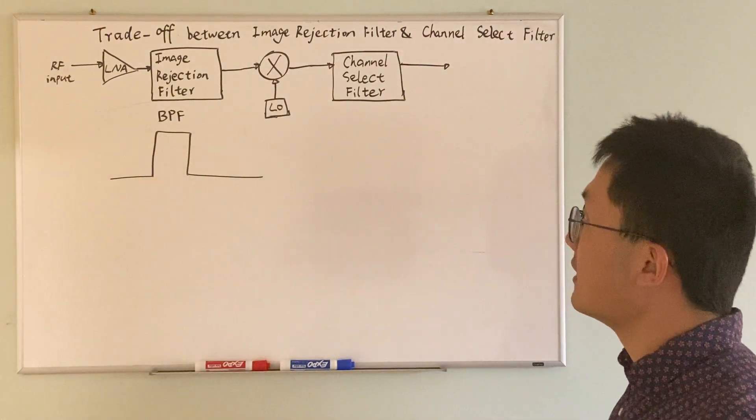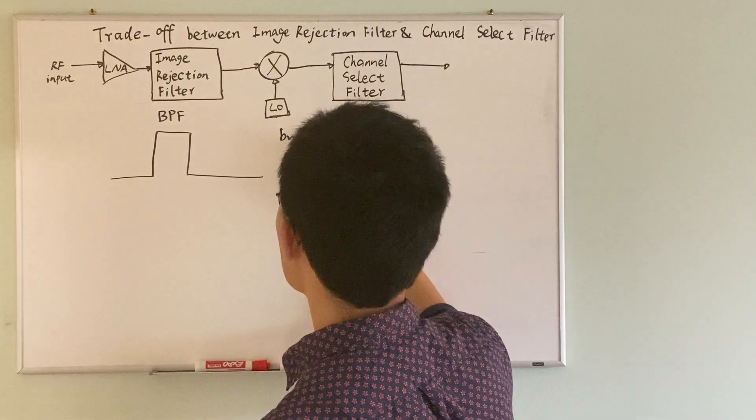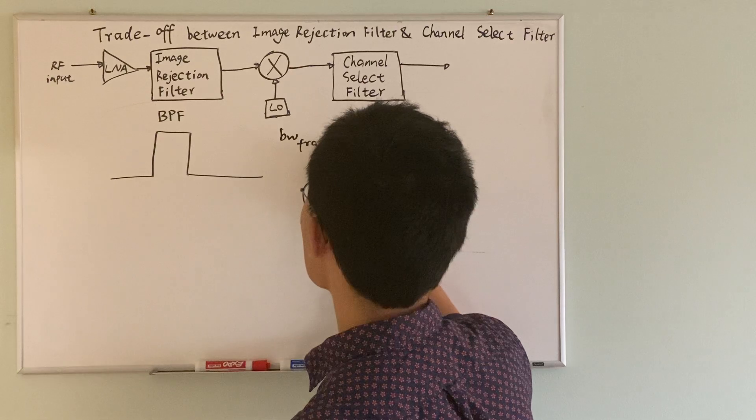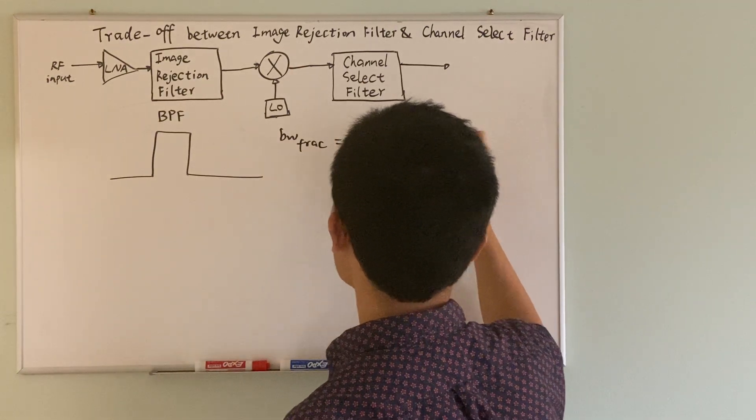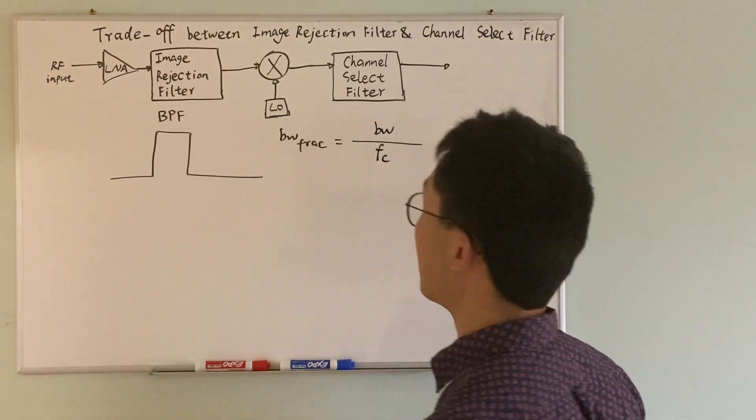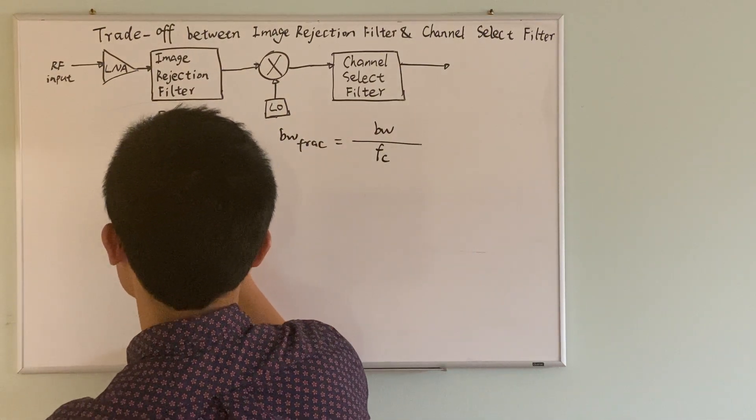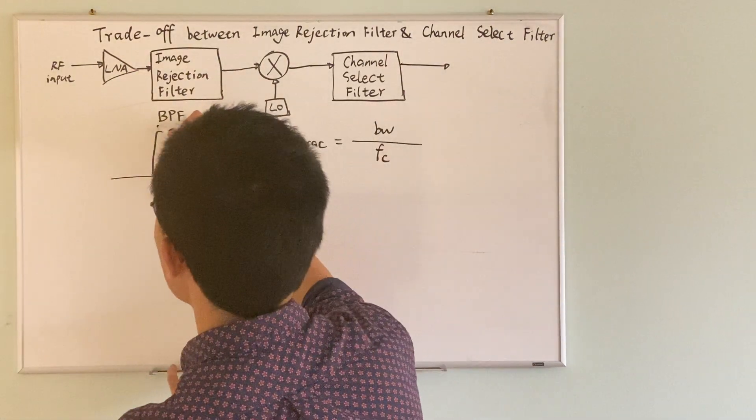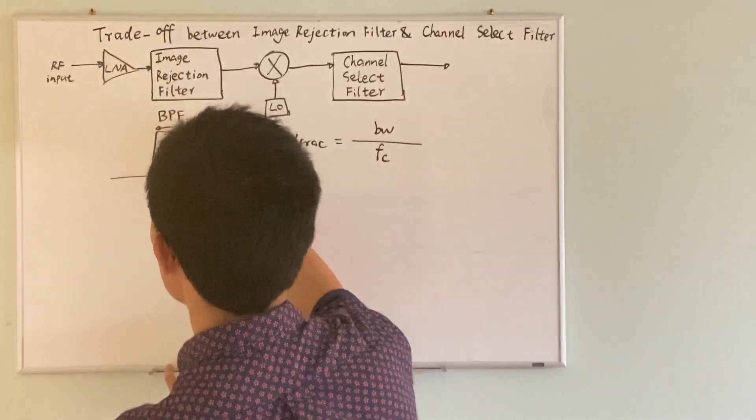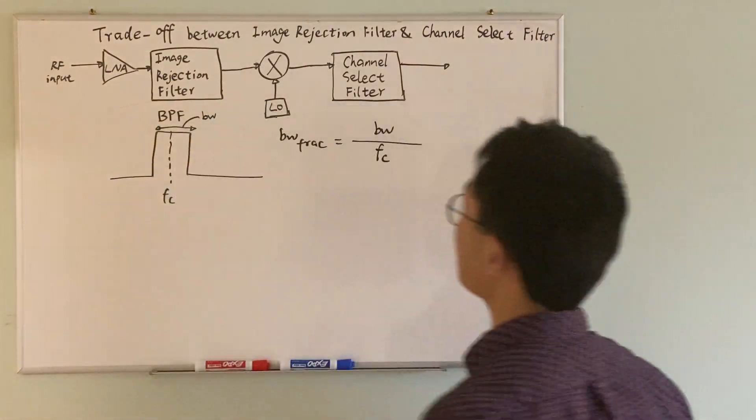There is a relationship: the fractional bandwidth equals to the absolute bandwidth divided by FC, where I define FC as the center of the passband. C stands for center. And the absolute bandwidth, I use BW stands for bandwidth.